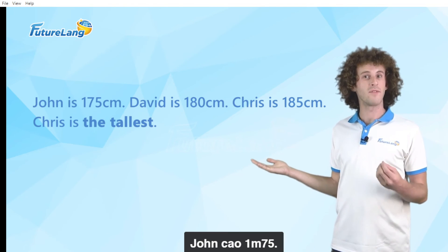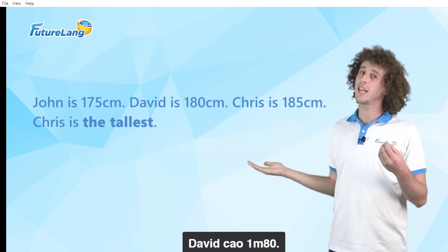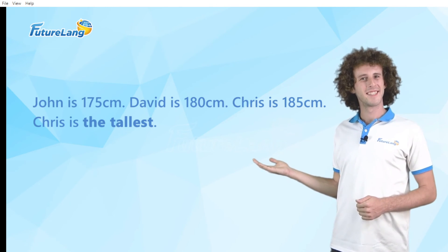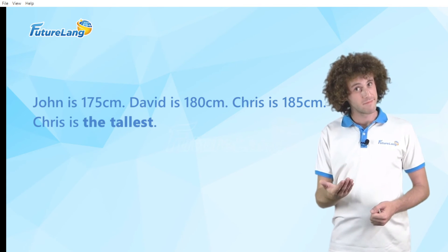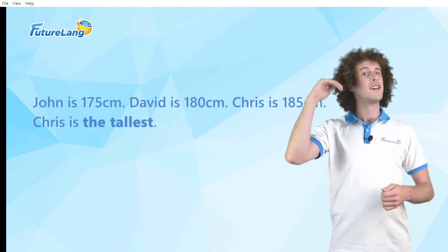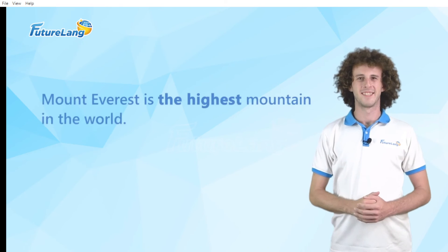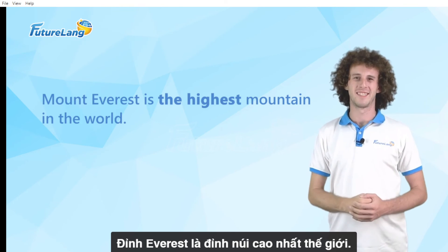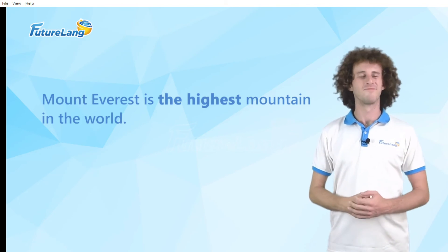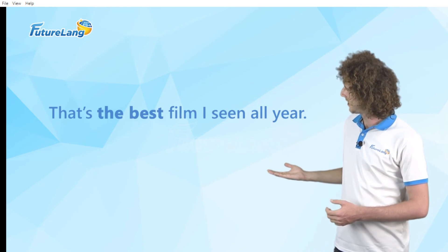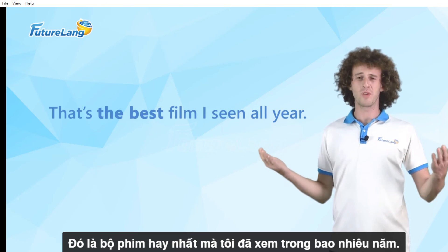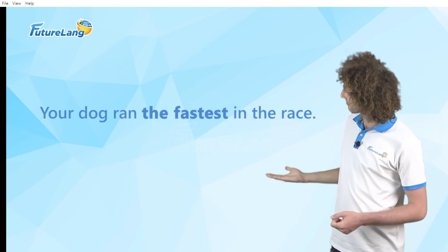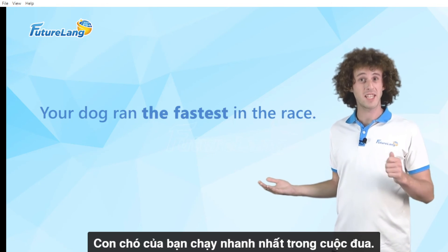John is 175 centimeters. David is 180 centimeters. Charles is 185 centimeters. Charles is the tallest. Mount Everest is the highest mountain in the world. That's the best film I've seen all year. And finally, your dog ran the fastest in the race.